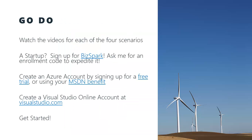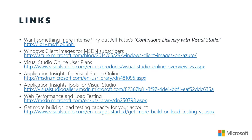So this wraps up the overview section. Here are a few go-dos: watch the videos for each of the four scenarios. If you're a startup, sign up for BizSpark — follow up with me directly and I can help you get an enrollment code to expedite the process. If you don't have an Azure account, sign up for a free trial, or if you're an MSDN subscriber, activate your Azure subscription through your MSDN benefits. Finally, create a Visual Studio Online account by going to visualstudio.com and clicking the Get Started button. My teammate Jeff Faddick also has a fantastic, more in-depth walkthrough on continuous delivery with Visual Studio — there's a link to it on the slide.